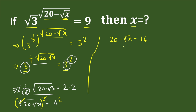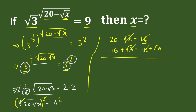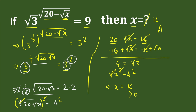To isolate square root x, we add square root x to both sides and subtract 16 from both sides. The negative and positive square root x cancel on one side, and 16 and negative 16 cancel on the other. On the left hand side we have 20 minus 16 equals 4, and on the right hand side we are left with square root x. Squaring both sides, x equals 4 squared, which is 16. So the final answer is x equals 16.